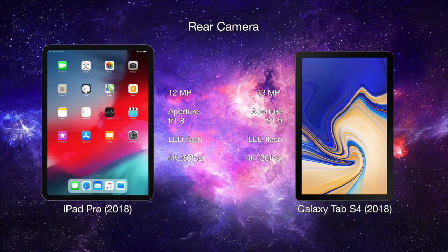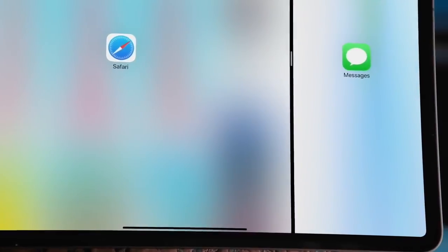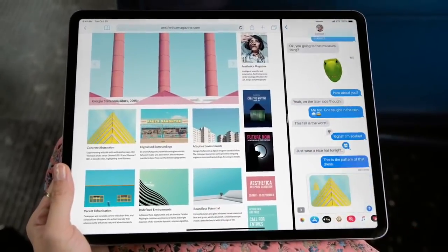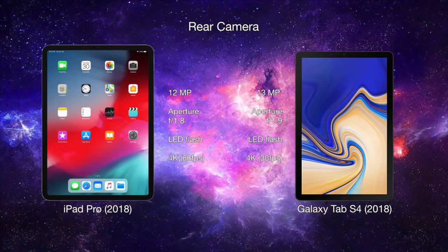The rear camera on the iPad Pro is 12MP with a focal length over f/1.8 aperture, while you're getting a 13MP camera on the Tab S4 with focal length over f/1.9 aperture, so the iPad Pro will slightly do better in low light conditions. Both tablets come with LED flashes and could record 4K videos. The iPad Pro can record at either 30 or 60 frames per second while the Samsung Tab S4 records at only 30 frames per second.